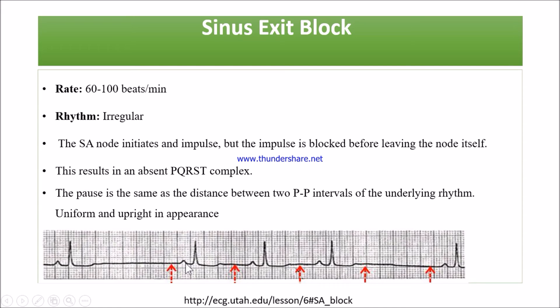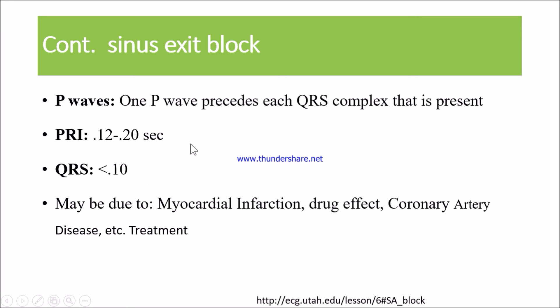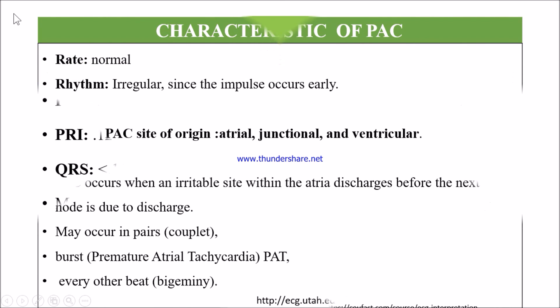The underlying rhythm is uniform in appearance — the P wave is uniform and not increased or decreased. The P wave precedes each QRS complex. The PR interval is 0.12 to 0.20 seconds, which is normal. The QRS duration is 0.10 seconds. The main causes include myocardial infarction, drug effects, or coronary artery disease. For treatment, refer to a physician.